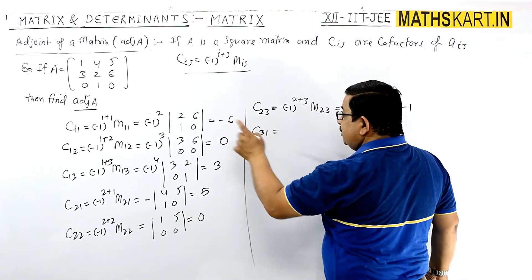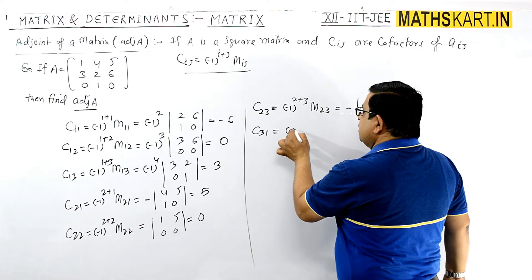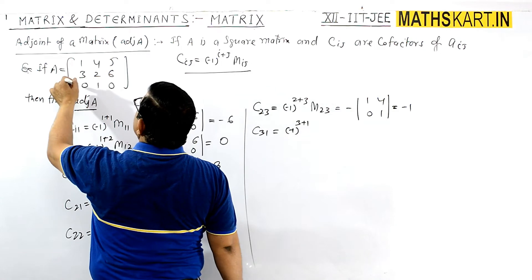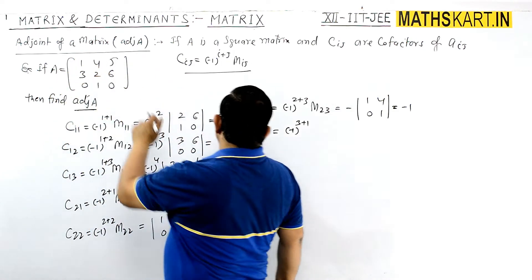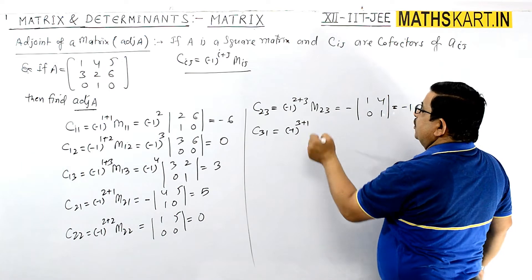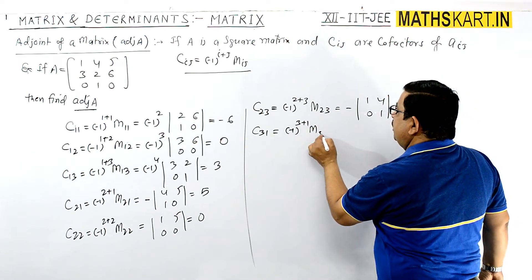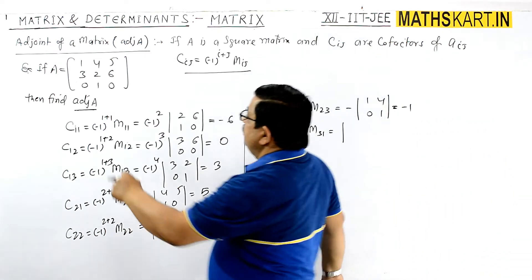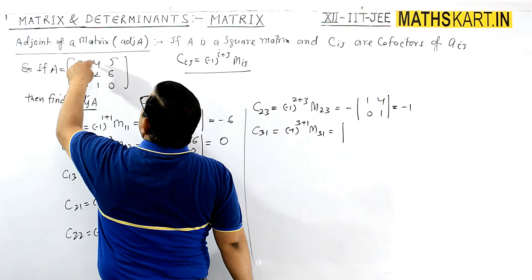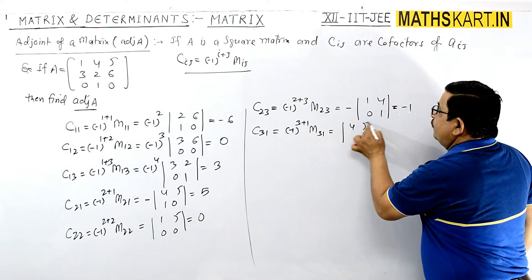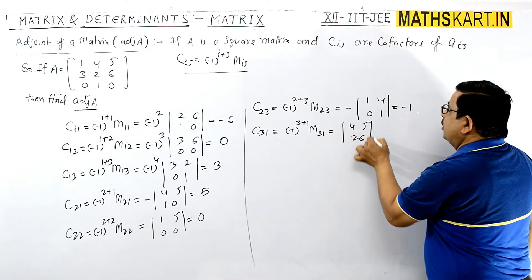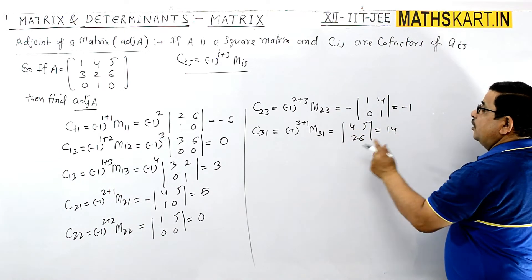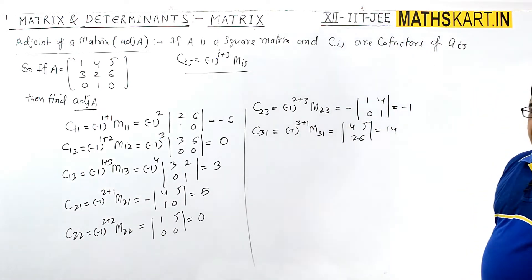Now come to the third row. C_31 = (-1)^(3+1) × M_31, which is positive. For M_31, remove that row and column, leaving |4,5; 2,6| = 24 − 10 = 14. The value was already positive, so C_31 = 14.